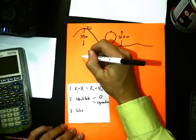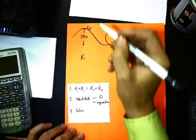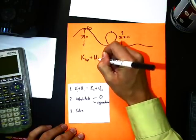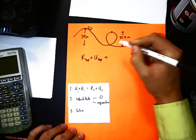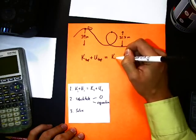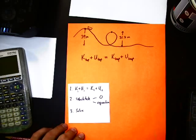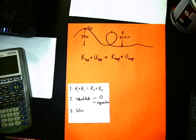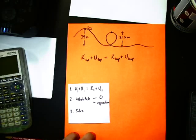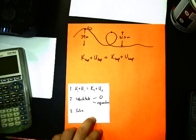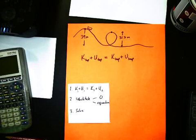So our first step, kinetic output at the top, so top, plus potential at the top, equals kinetic at the loop, plus potential at the loop. That's an easy first step, no problem. So step two, substitute either zero or the appropriate equation. So let's go ahead and do that.